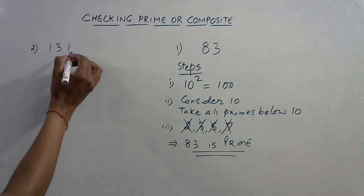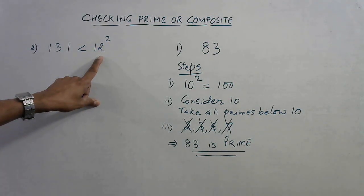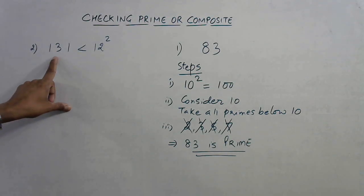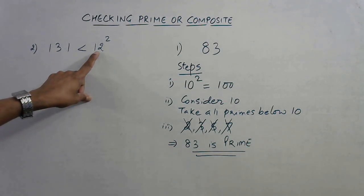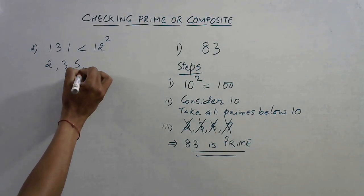12 squared is 144, which exceeds 131, so we need to take all primes below 12. So all primes below 12: 2, 3, 5, 7, and 11.